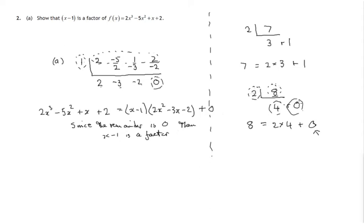4 times, remainder is 0, so 2 was a factor of 8. So x minus 1 into this cubic expression goes this number of times with remainder 0. So x minus 1 is a factor since the remainder is 0.